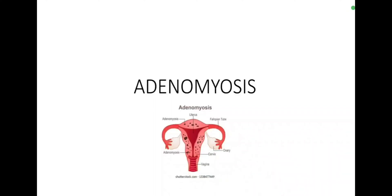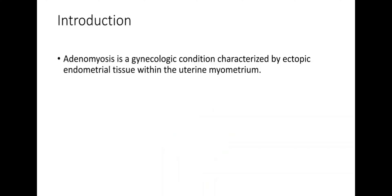Hello everyone, today we'll be discussing adenomyosis. Adenomyosis is a gynecological condition characterized by ectopic endometrial tissue within the uterine myometrium. This condition was first described in 1860, and the histopathologic findings were termed cystosarcoma adenoids uterine.